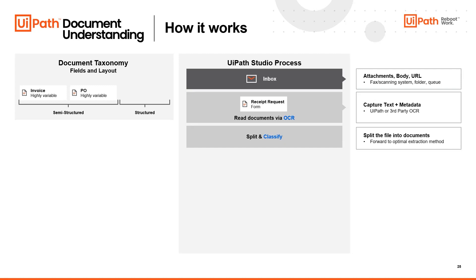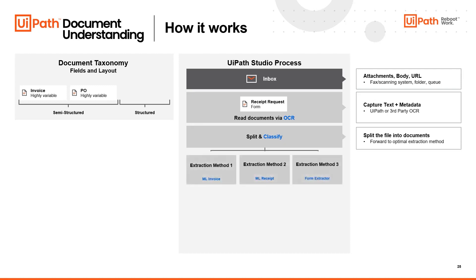Classify simply looks at the document itself and figures out what it is — is it a receipt request, a PO, or an invoice? Once it's classified and we understand what it is, we can forward it to the optimum extraction method. Depending on the document type — structured or semi-structured — we will want to provide a different extraction method.